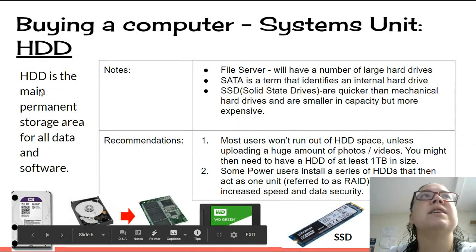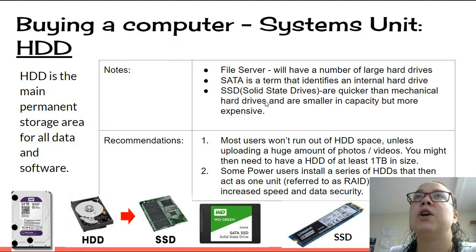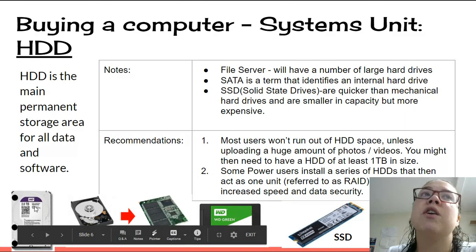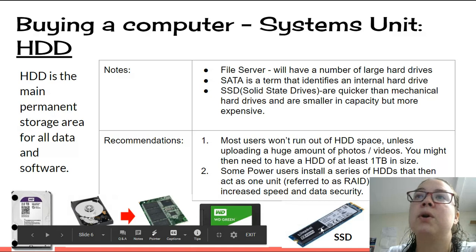Looking at hard drives first, then solid state storage: a file server will have a number of large hard drives. SATA is a term that identifies an internal hard disk drive. SSDs — solid state drives — are quicker than mechanical hard drives; they're smaller in capacity but more expensive. A solid state drive you'd generally buy at 128 or 256 gigs, where a hard drive you're buying two, four, or six terabytes. You get less storage for the same cost, but it's much faster and makes a huge difference to performance.